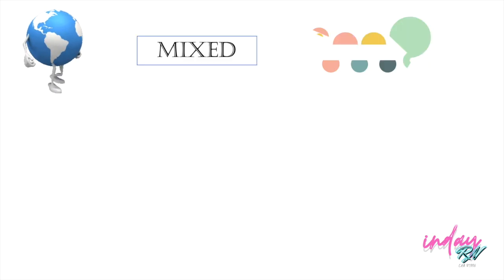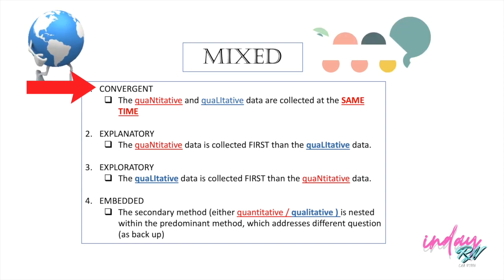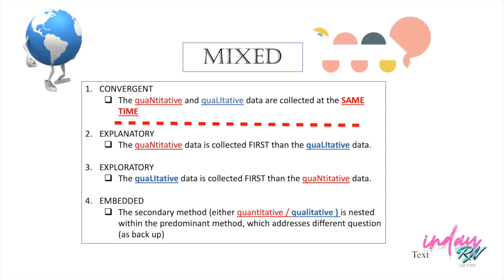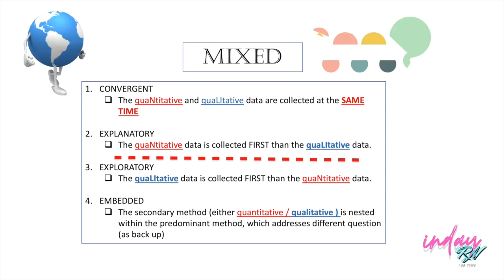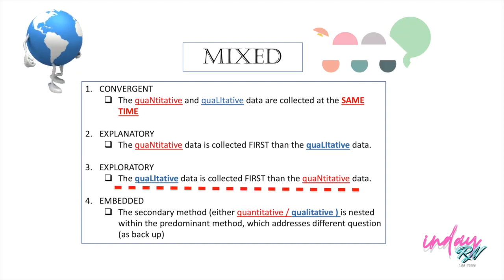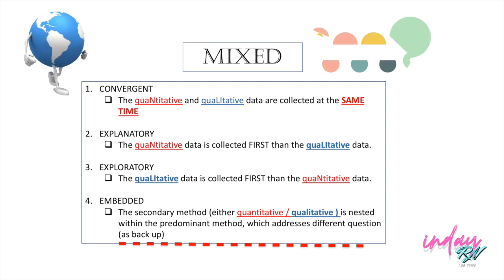Here in mixed approach, we have four types. Number one is Convergent — the quantitative and qualitative data are collected at the same time, so they are on the same pace. Here in the Explanatory, the quantitative data is collected first before the qualitative data. Then once the collection of data is done, it will be interpreted. Meanwhile, here in Exploratory, the qualitative data is collected first before the quantitative data. And the last one is Embedded — either the quantitative or the qualitative is nested within the predominant method, which addresses a different question.